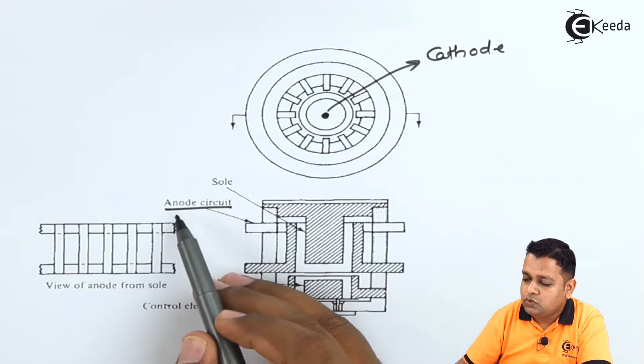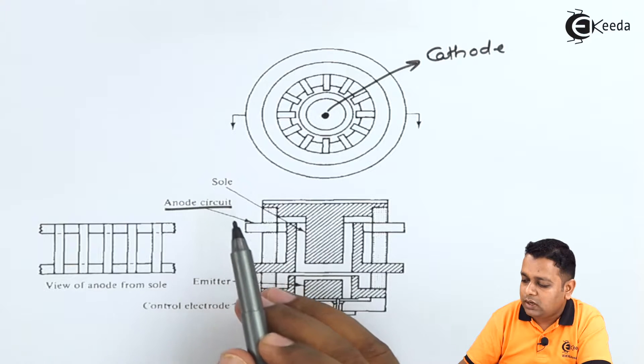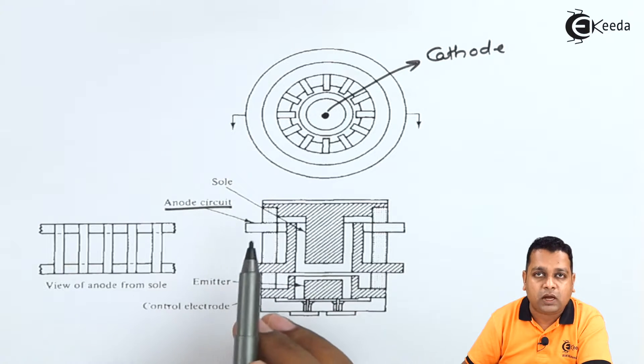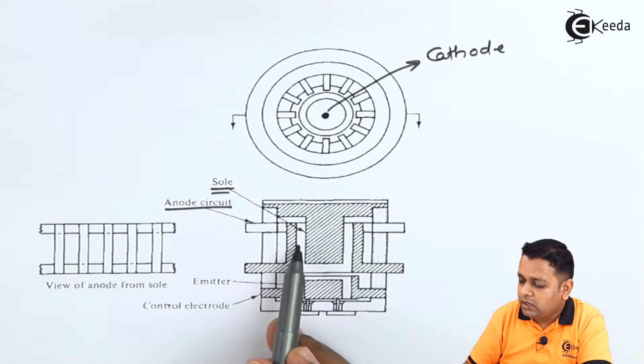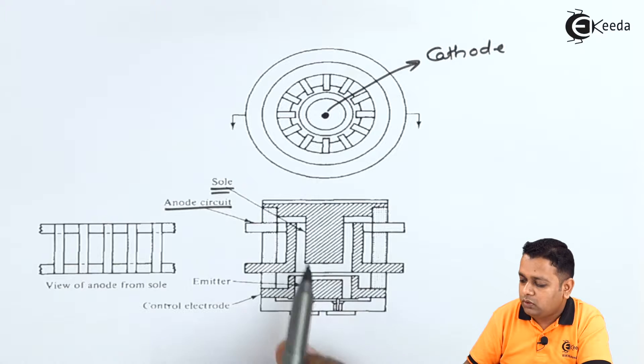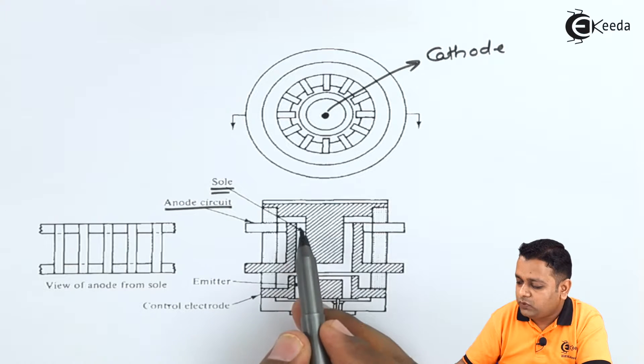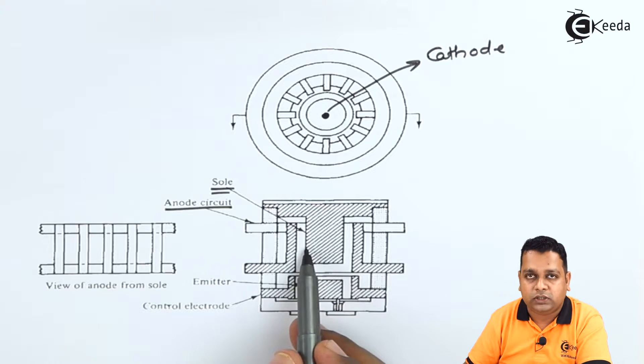But along with these two electrodes there is another thing that is new in the magnetron, that is sole here. So sole is provided in between the cathode inside and here it is the anode circuitry. So vertically you can see this particular place to be of sole here.